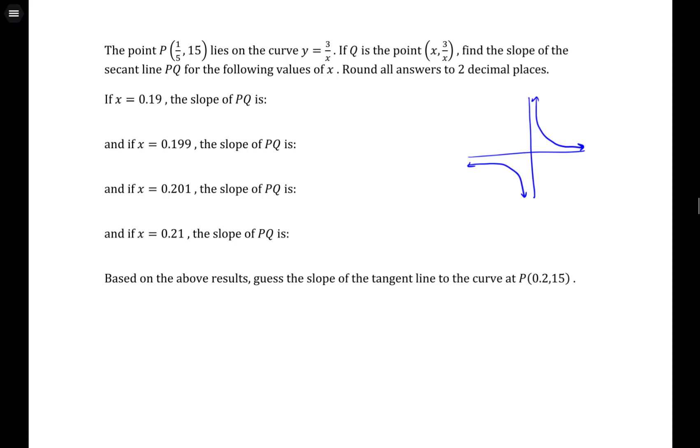Now, we have some point 1/5 and 15. So let's just say it's hypothetically right there. And this point right here is just any other point that happens to exist on the curve because you choose some x value, plug that x value into your function, and you get the y value associated with it.